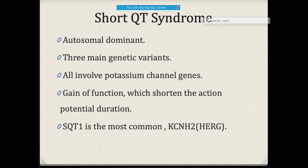Not only is a long QT bad, but a very short QT is also not a good marker. Short QT interval is autosomal dominant with three main genetic variants, all involving potassium channel genes. Short QT type 1 is the most common variant.